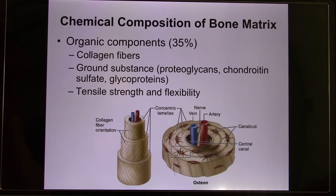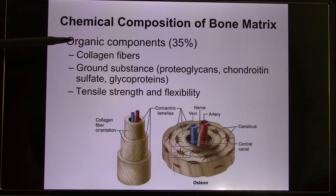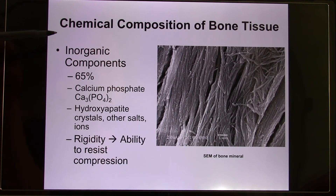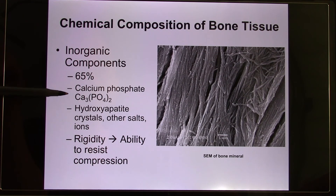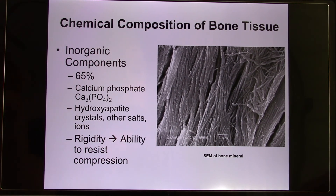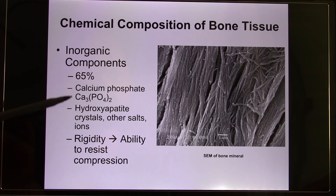Now let's look at the bone matrix. The bone matrix has fibers that give it a little bit of flexibility, and you have the ground substance, and also the inorganic component — a big component of which is calcium. So the bone is a big storage of calcium. When osteoclasts eat the bone matrix, they release calcium into the blood. So one function of osteoclasts is to maintain the homeostasis of calcium. That's why drinking milk can help bone health because of the calcium.